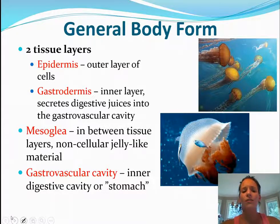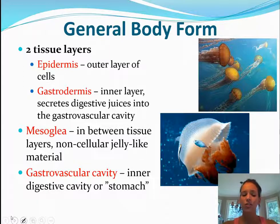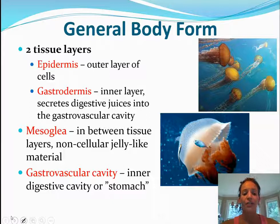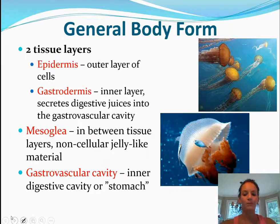They also have something called mesoglea, which is in between those two tissue layers and is jelly-like — it's kind of what makes them squishy. And they have something called a gastrovascular cavity, which is that inner digestive cavity, or what serves as their stomach.